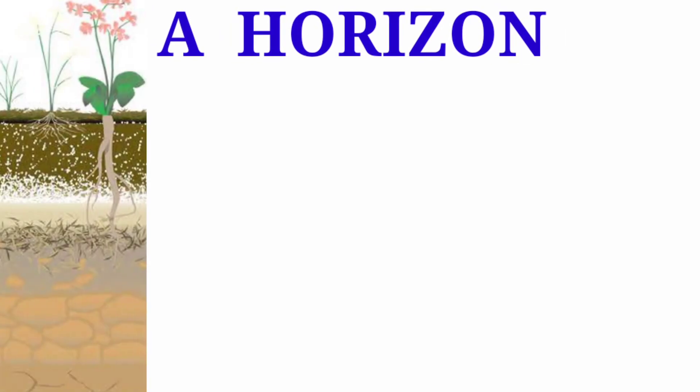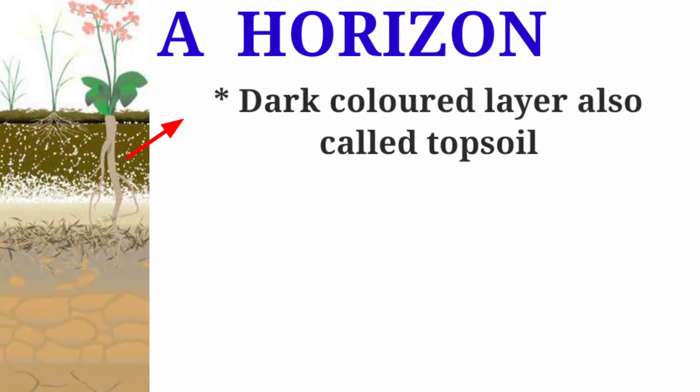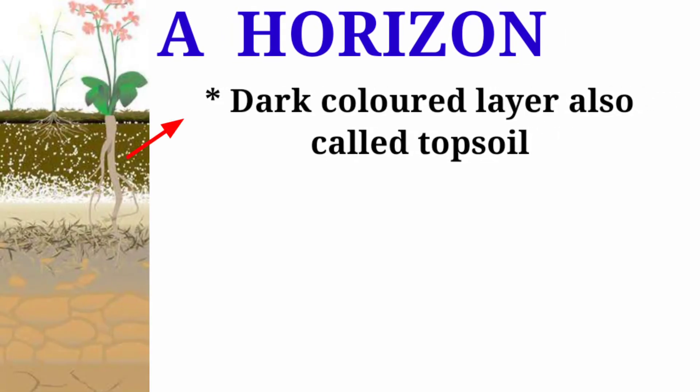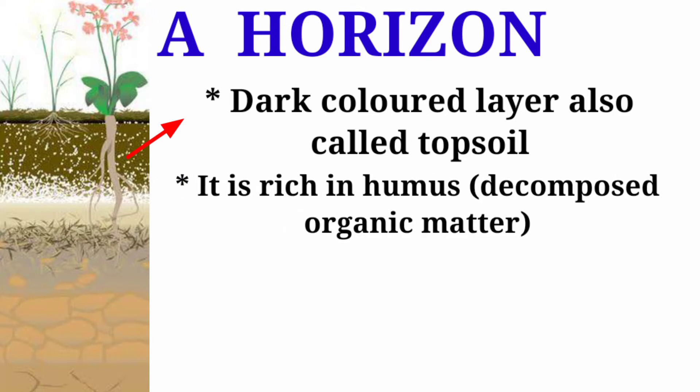A-Horizon is a dark colored layer also known as topsoil. It is rich in decomposed organic matter called humus. Humus is formed by the decomposition of plant parts and dead and decayed animal remains. It is mixed with soil and gives the soil a loose texture that holds water and allows air to diffuse through it.